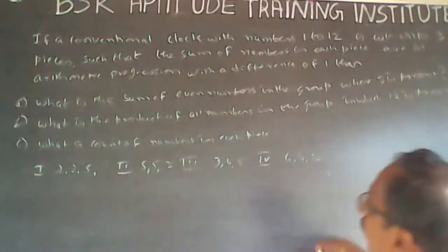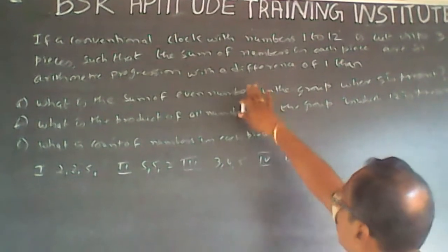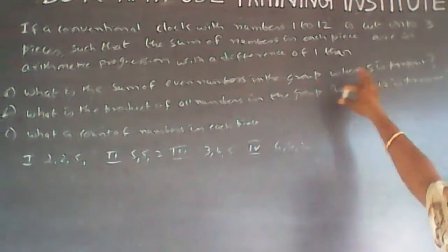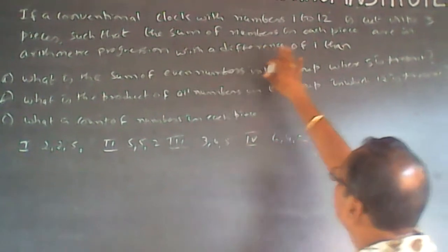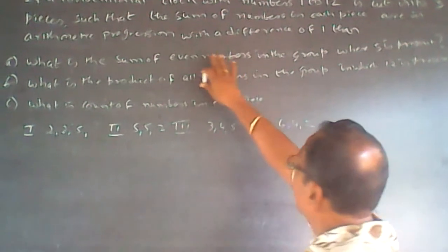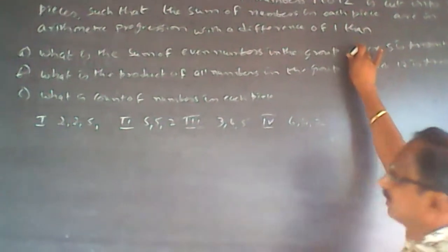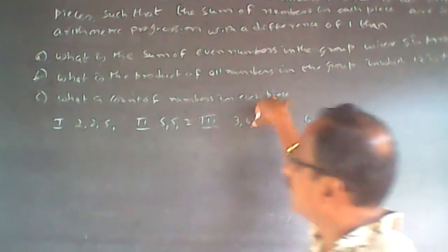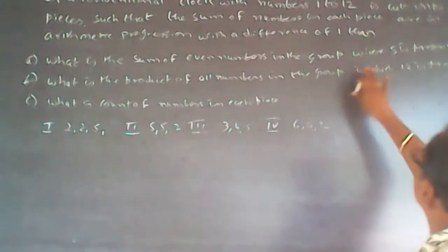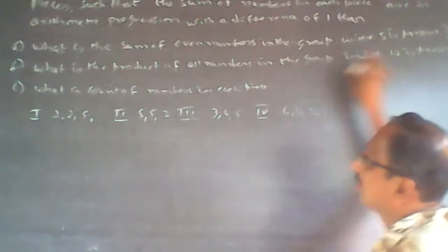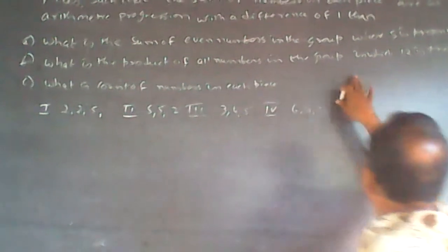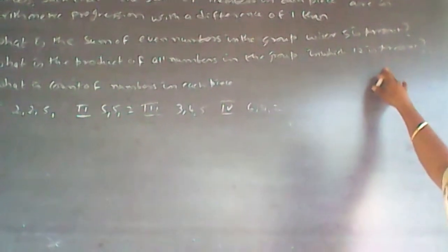The question is: if a conventional clock with numbers 1 to 12 is cut into 3 pieces such that the sum of the numbers in each piece are in arithmetic progression with a difference of 1, there are 3 questions. A: What is the sum of even numbers in the group where 5 is present? B: What is the product of all numbers in the group in which 12 is present?